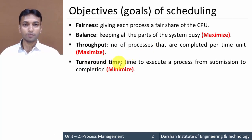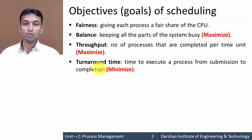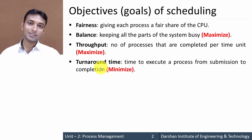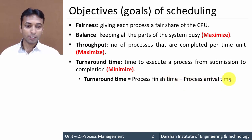Next is turnaround time — the time to execute a process from submission to completion. It is the time between submission of a task and its completion, and it should be minimum. The formula is: Turnaround Time = Process Finish Time − Process Arrival Time. Remember this formula as it is used in scheduling algorithms.